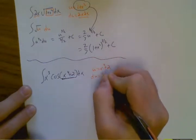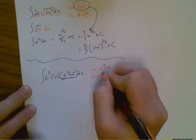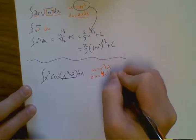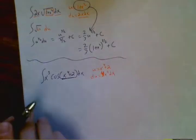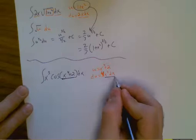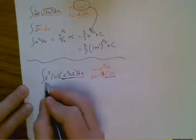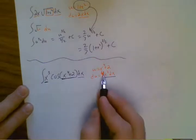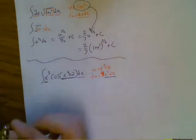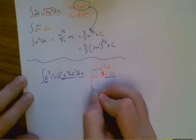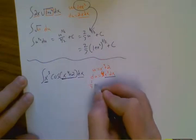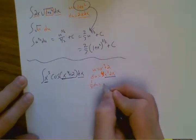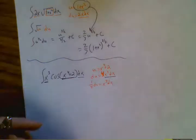du is going to be 4x to the 3rd dx, which is pretty good. I have an x to the 3rd dx, x to the 3rd dx right there. The problem is I don't have a 4. So I'm going to divide both sides by 4, kind of like I did in that original example earlier. 1 4th du equals x cubed dx. Now it's a perfect match.